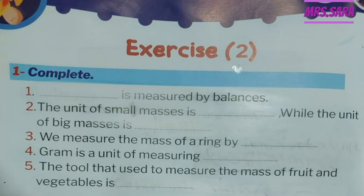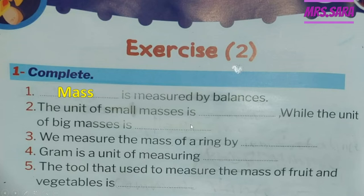We have some questions. Question 1: Complete. What is measured by balances? Balance is a measuring tool of mass, so mass is measured by balances. Number 2: The unit of small masses is gram, while the unit of big masses is kilogram. When you see the magic word 'unit' and 'small mass,' we talk about the measuring unit of small mass, which is gram; and for big mass, kilogram.